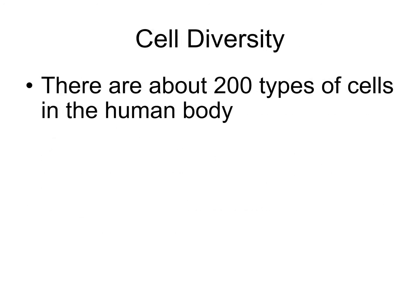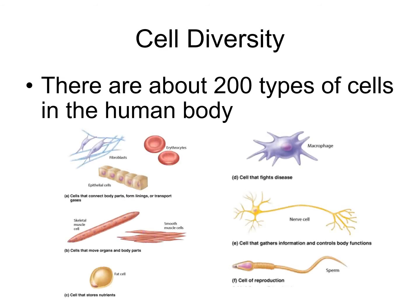There are about 200 types of different cells in the human body. There is an enormous diversity of cells in terms of their anatomy, which of course reflects their physiology.